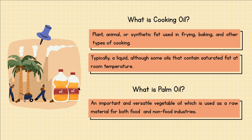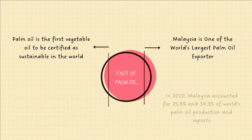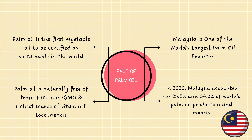Now we'll look at what palm oil is and what it's used for. Palm oil is a valuable and versatile vegetable oil utilized as a raw material for both food and non-food industries. Palm oil is the first vegetable oil to be certified as sustainable in the world. It is naturally free of trans fats and non-GMO, and is the richest source of vitamin E tocotrienols, which support brain and heart health.